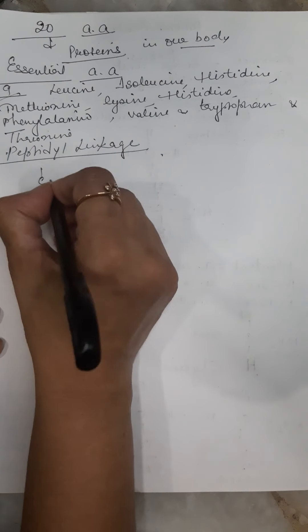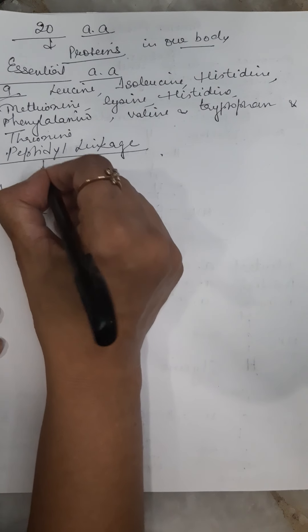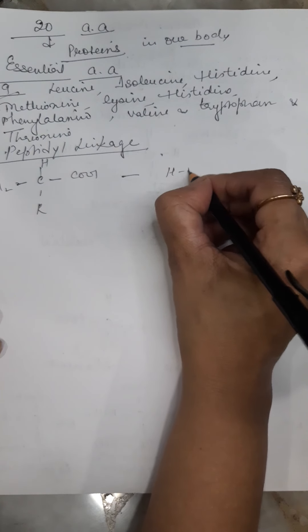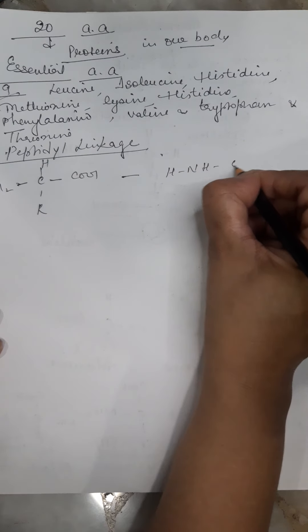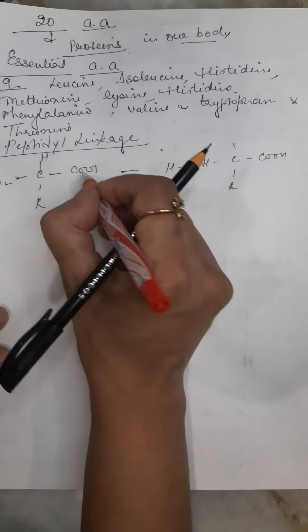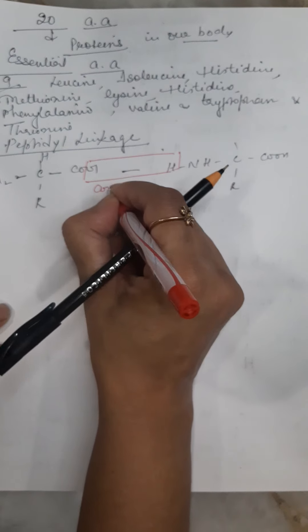Let us draw 2 amino acids. Let us write R here only - you can replace it by any group according to your wish.